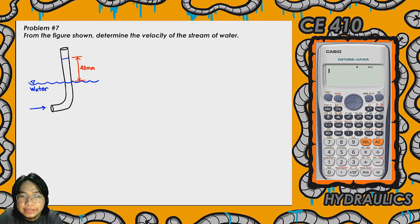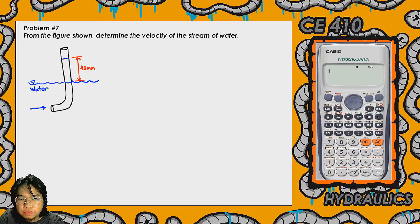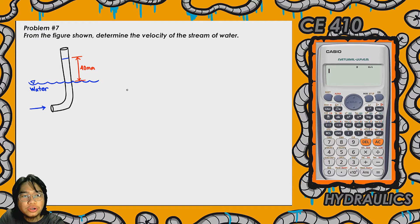Let's go! So this is the problem: from the figure shown, determine the velocity of the stream of water.